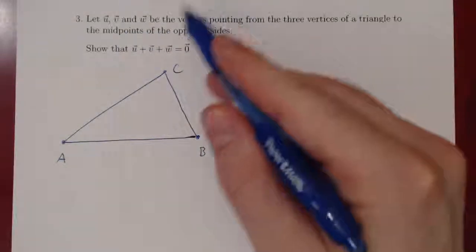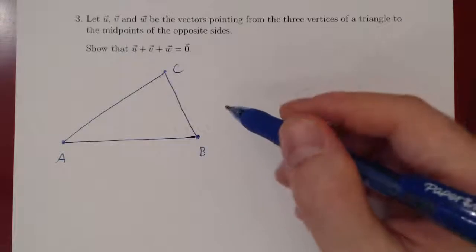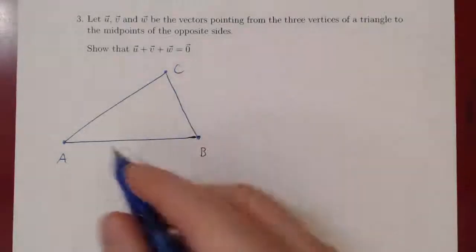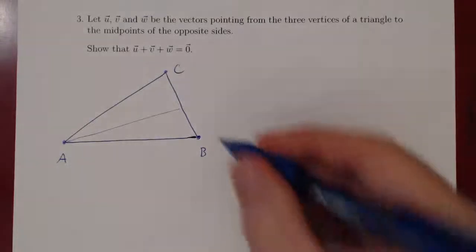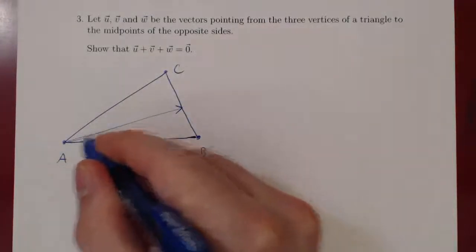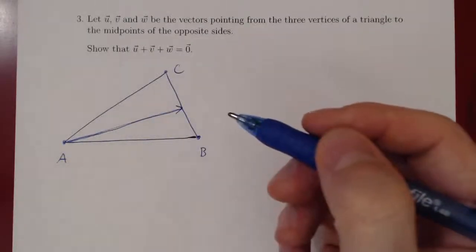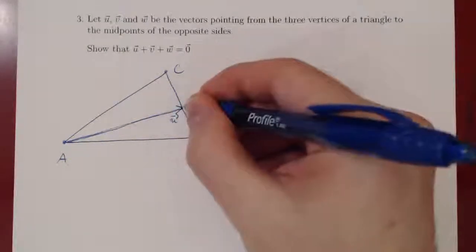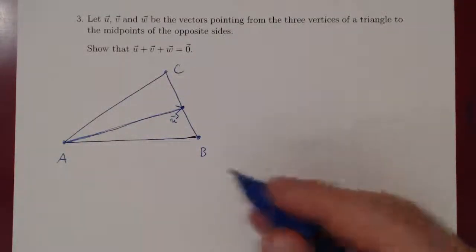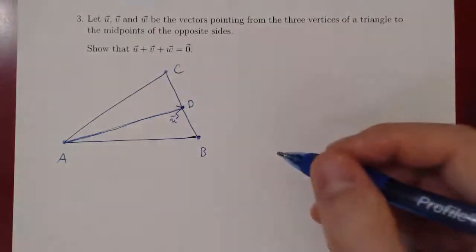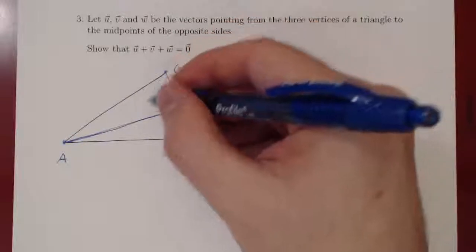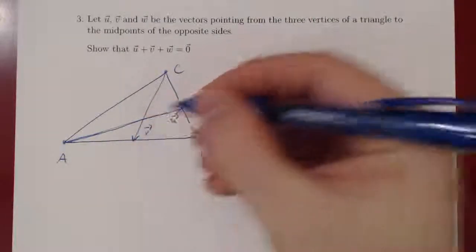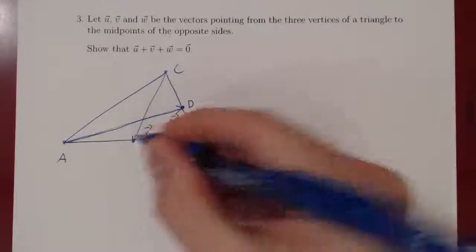And what do we have? We have these three vectors pointing from the vertices to the midpoints of the opposite side. So say here we have vector U, starting at A, pointing to the midpoint of segment BC. So this is vector U. And we have here a vertex of interest, so we'll go with A, B, C, naturally D. Then we have the vector pointing from vertex C to the midpoint of AB. Say this vector is V. And again we have a vertex of interest. Let's call this vertex E.